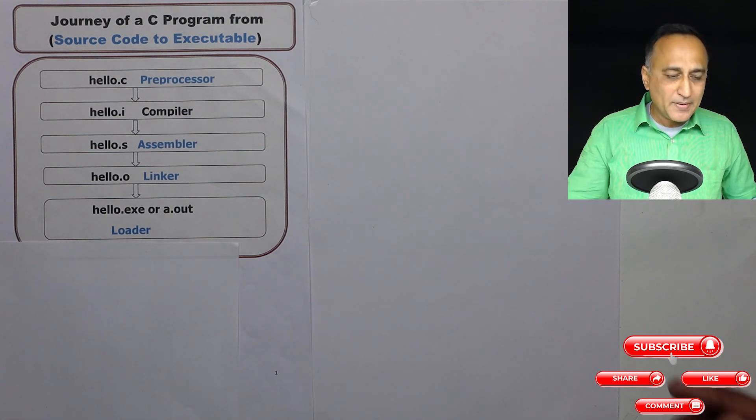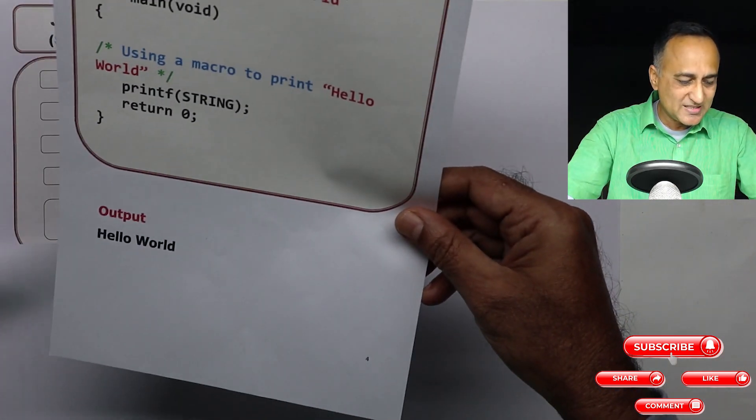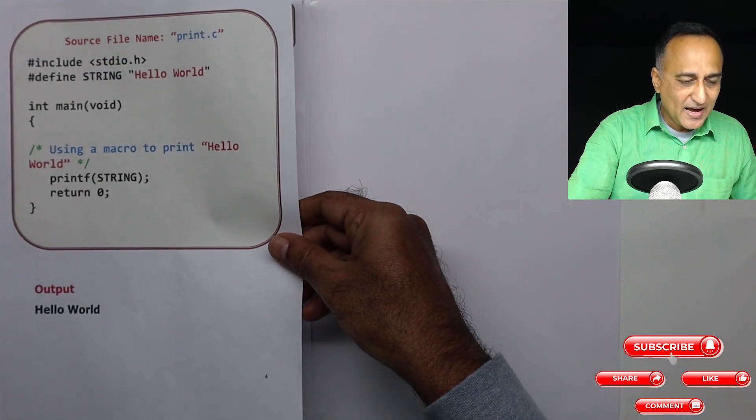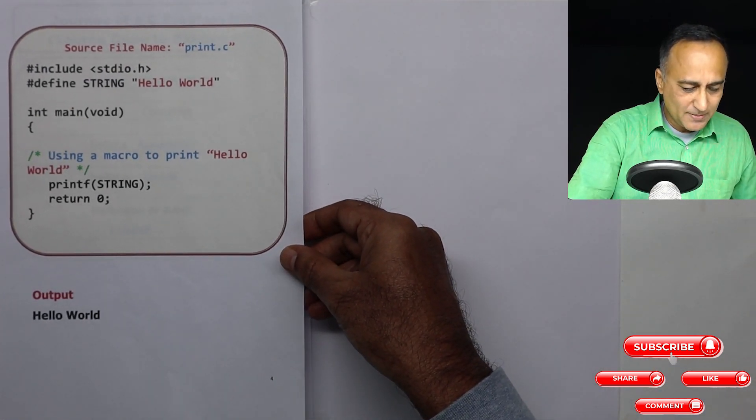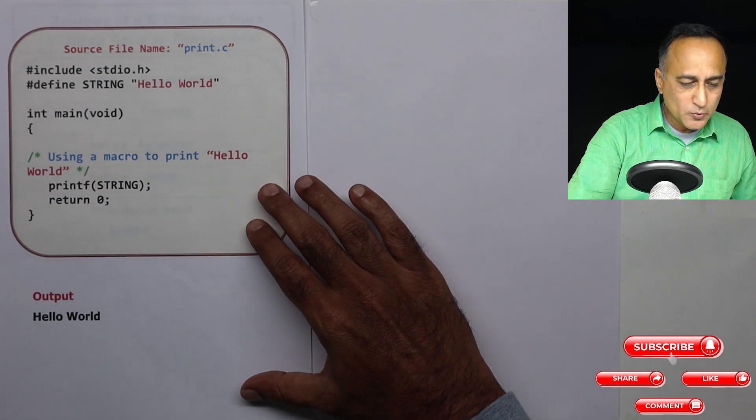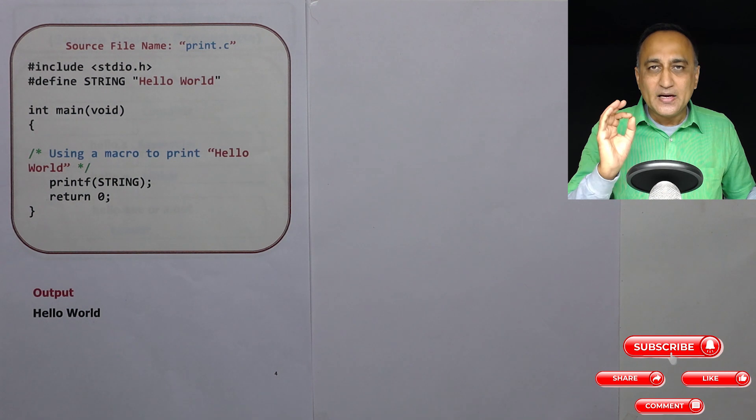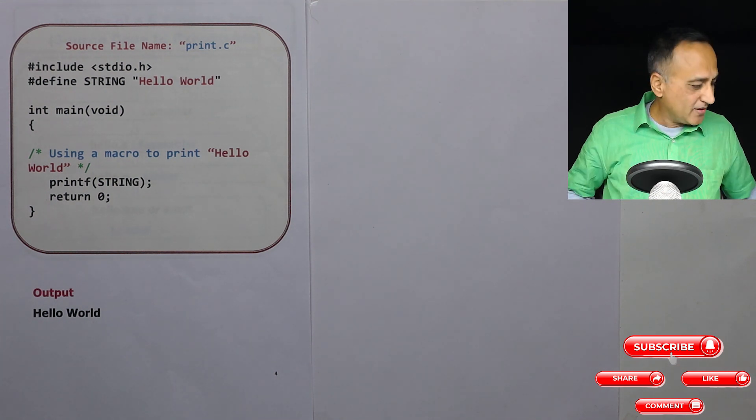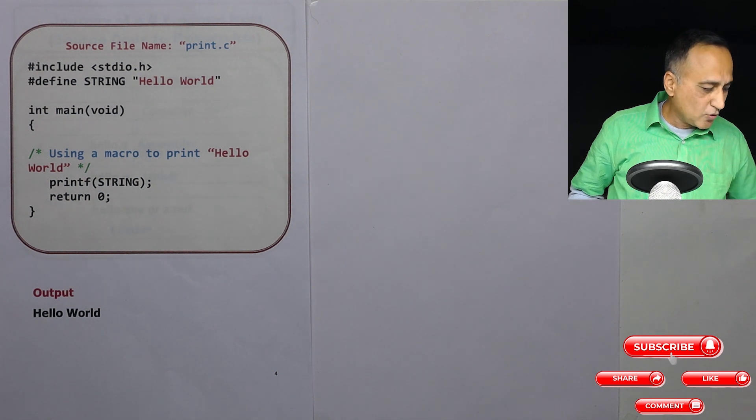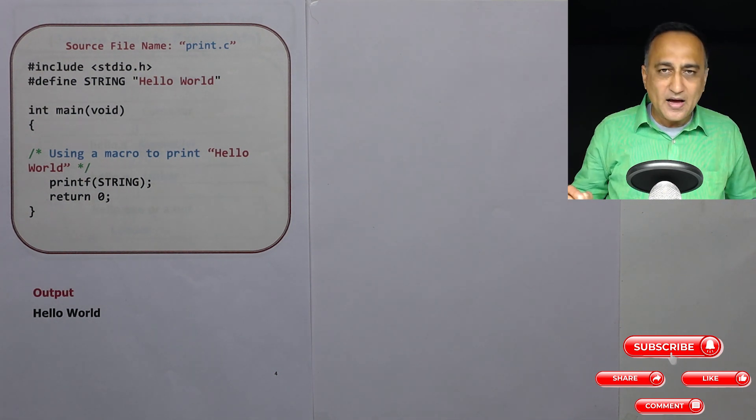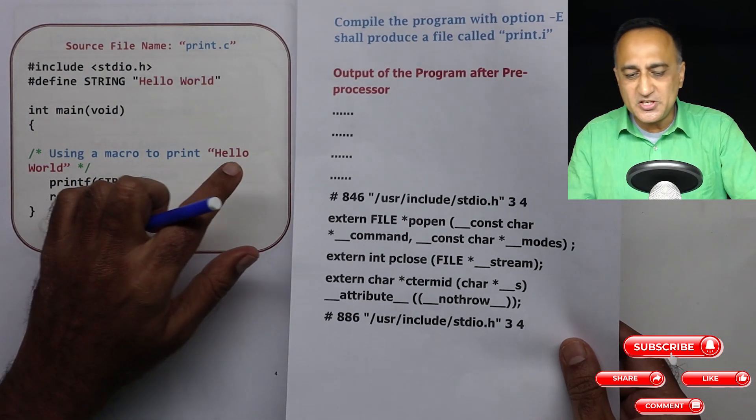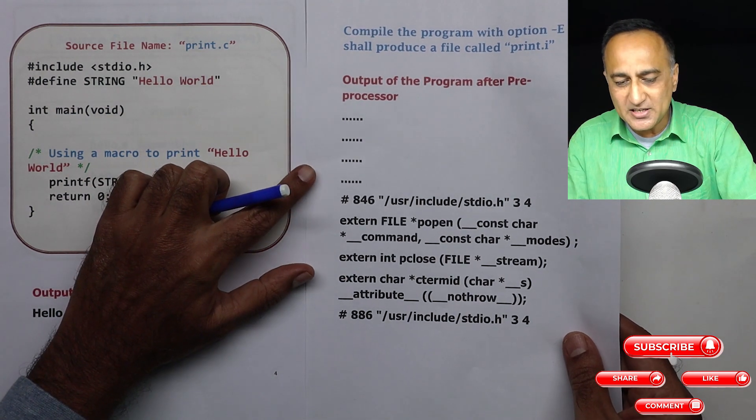Now in order to get a better understanding of this particular process, let us say I have a program like this. I will show you step by step what happens to this program when it is only preprocessed, only compiled, only assembled, and the object code created. So what I am doing in the very first stages I am taking this particular code and I am using a compiler called GCC which is available on Linux, Windows, and Unix.